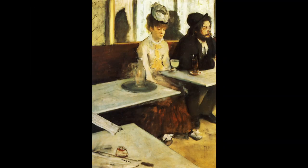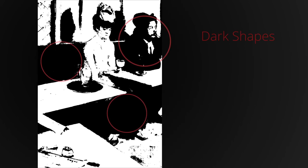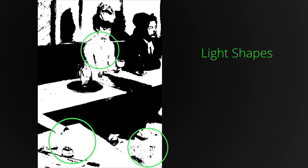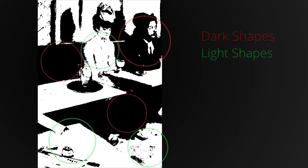The other French Impressionists learned a lot about notan from the Japanese master printmakers. For example, in this painting by Degas, we can again see two values. We have dark shapes and we have light shapes, and these dark and light shapes make up the whole painting.